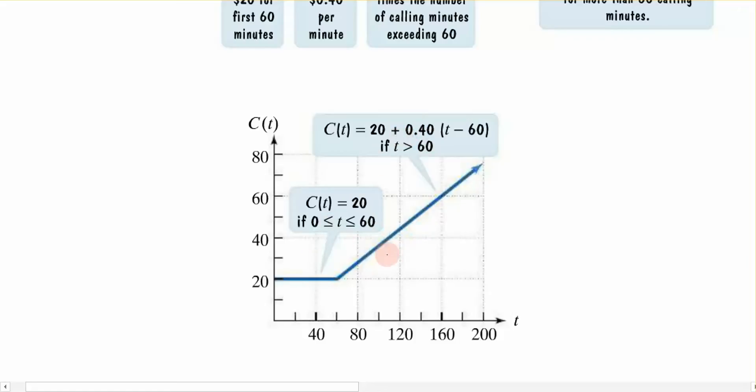Now, each portion of the graph has its restrictions. So remember, I can talk anywhere between 0 and 60 minutes, and I'm following along just this portion of the graph. And anything after 60 minutes is going to be on this portion of the graph.